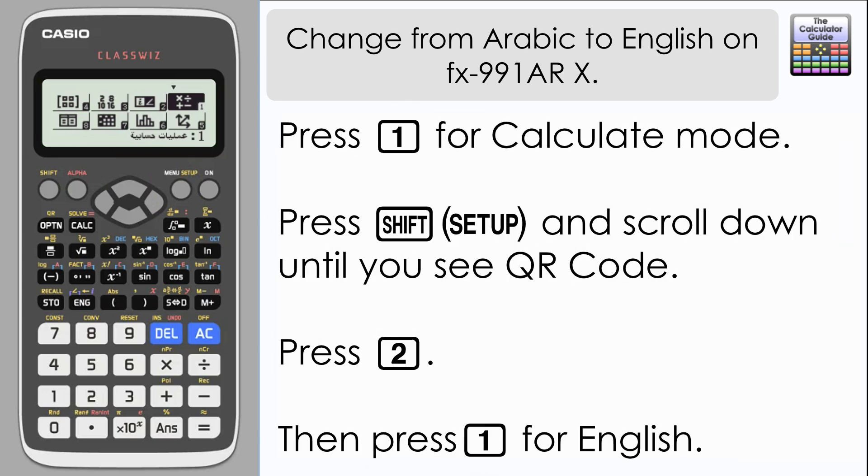Make sure that you are in calculate mode which is the first mode, so you can just press one or equals at this point. Once you're in calculate mode, press shift and then setup so that you're in the setup menu, and then scroll down until you can see QR code. It should be the bottom menu on there.